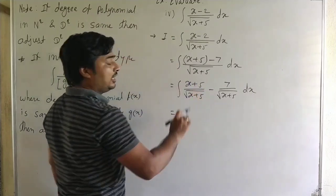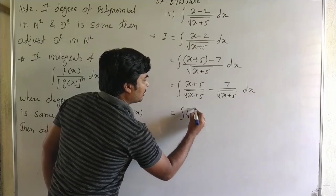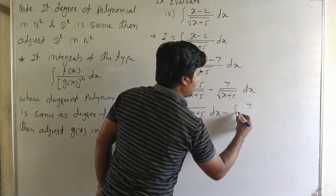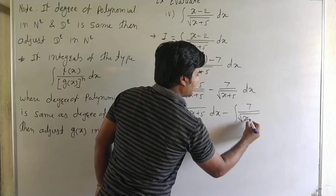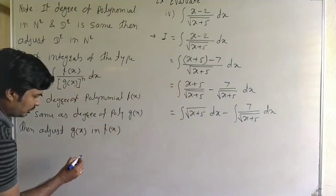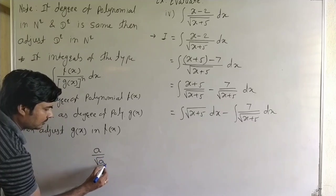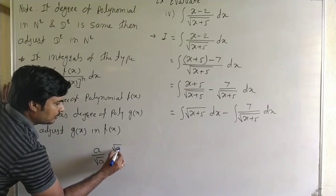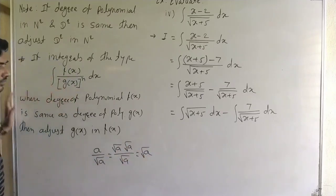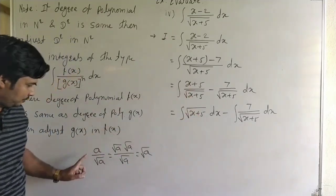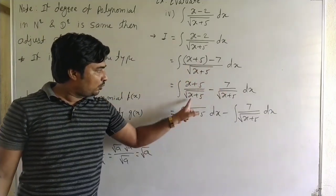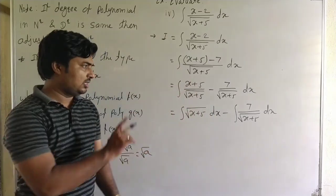Now, (x plus 5) upon √(x+5): this can be simplified because (x+5) = √(x+5) · √(x+5), so one √(x+5) cancels, giving √(x+5). So we have: integral of √(x+5) dx  minus  integral of 7 upon √(x+5) dx. We know that a upon √a equals √a, so (x+5)/√(x+5) = √(x+5).